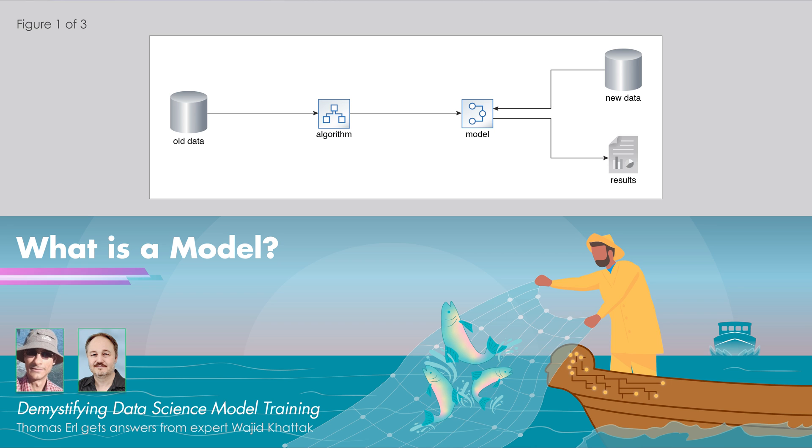If our fishing company is using a data science system to customize its fishing nets, the model produces that data intelligence for us. But how does the model exist in the data science system?